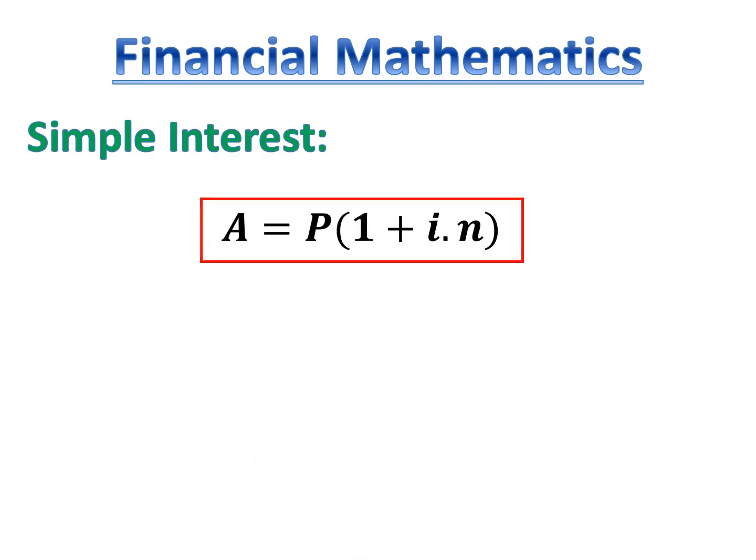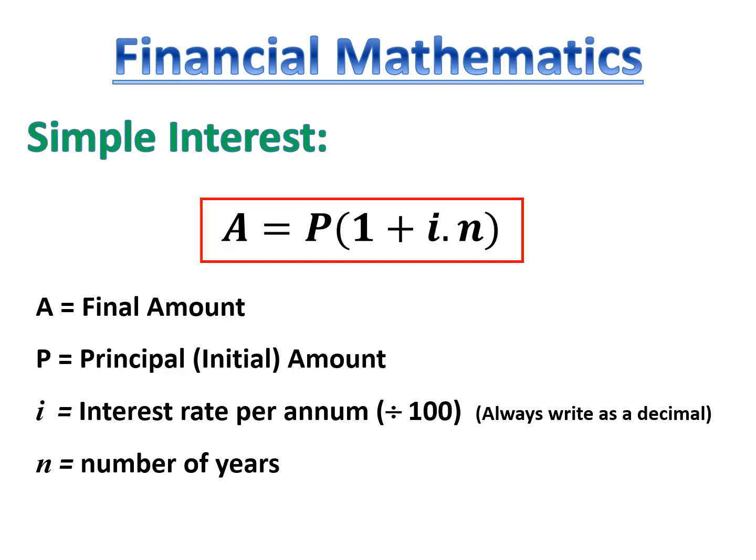The formula is A equals P in brackets, 1 plus I times N. A is the final amount you will have in your bank account. P is the principal, or the initial amount — the money you're going to put into your bank. I is your interest rate per annum, and you always divide the number they give you by 100, so we write it as a decimal.